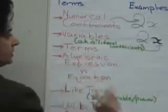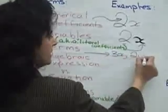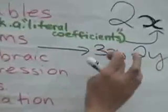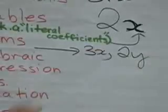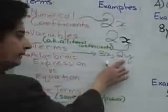The most common use is the word variables. The next thing here is called terms. The term is anything that has both the numerical and the literal coefficient, or the number and the letter together. Two examples would be 3x and 2y.